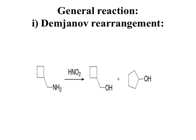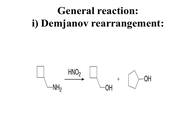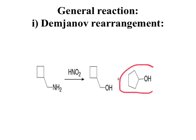Here I have given the example of cyclobutane — you can take any cycloalkane and carry out this reaction. This is cyclobutane methyl amine which is treated with nitrous acid, and it leads to formation of two kinds of products. One product is where the cyclobutane ring is intact, and the other is the ring enlarged product, meaning there is an increase in size of the ring. Let us now discuss the mechanism of how we get these two products.